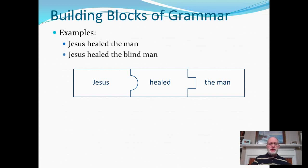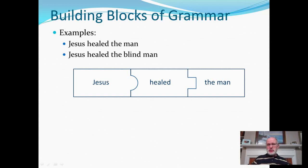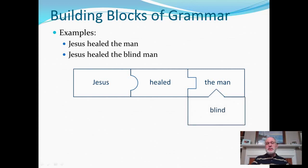Let's look at another example where we expand just a little bit. Instead of Jesus healed the man, now it's Jesus healed the blind man. Can you visualize where the word 'blind' is going to go in this little jigsaw puzzle? If you're envisioning it under the word 'man' with a little triangle-shape protrusion, you got it right. 'Blind' is giving us more information about which man Jesus healed.